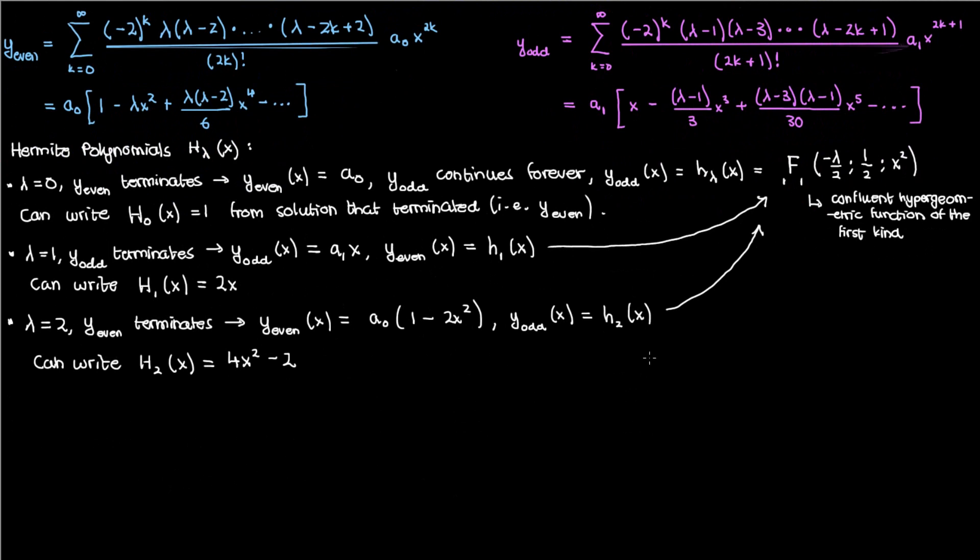You can keep going with λ equals 3, 4, 5, and so on, and for each solution that terminates you get a Hermite polynomial, or at least a constant multiple of a Hermite polynomial.